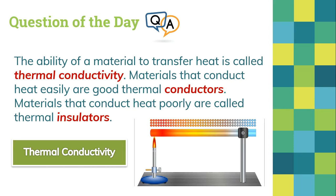This is called thermal conductivity. Materials that conduct heat easily are good thermal conductors — we had the opportunity to look at conductors when we were discussing electricity, and now we're looking at conductors from the heat perspective. Materials that conduct heat poorly, meaning they limit conduction of heat, are called thermal insulators. So conductors transfer heat well, while insulators prevent heat from being transferred.